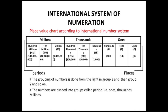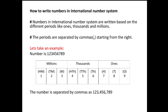One more important thing to note: in the Indian number system, the grouping also starts with a group of three digits, but then continues in groups of two digits. Here in the international number system, every period has exactly three place values, so the division is equal across all periods.